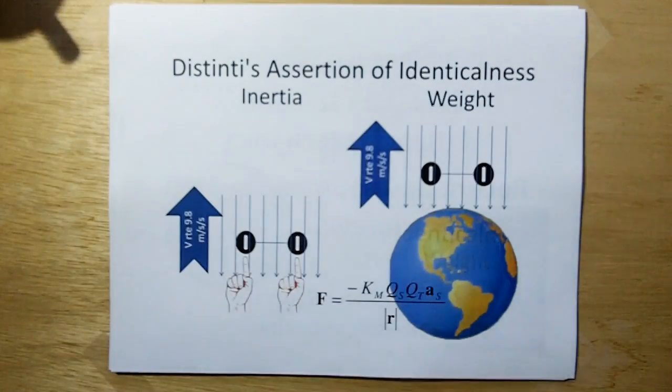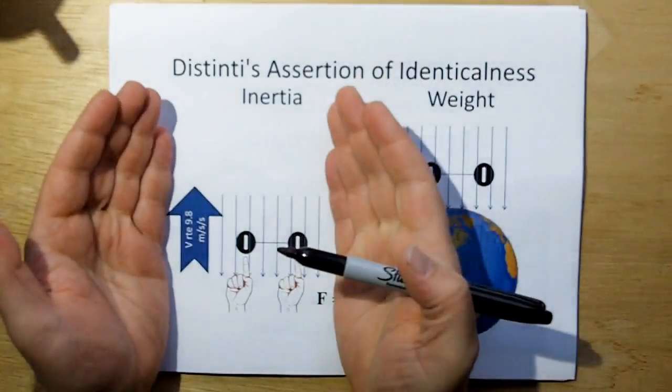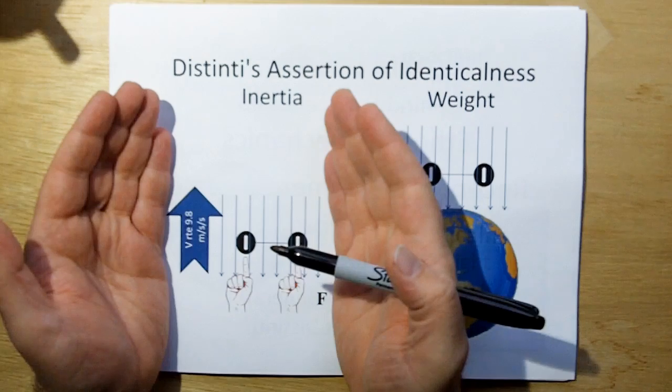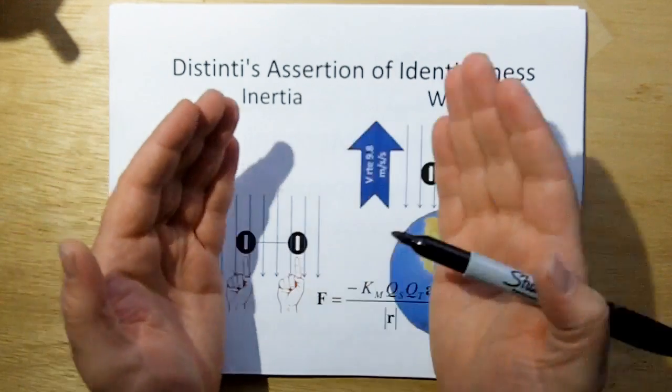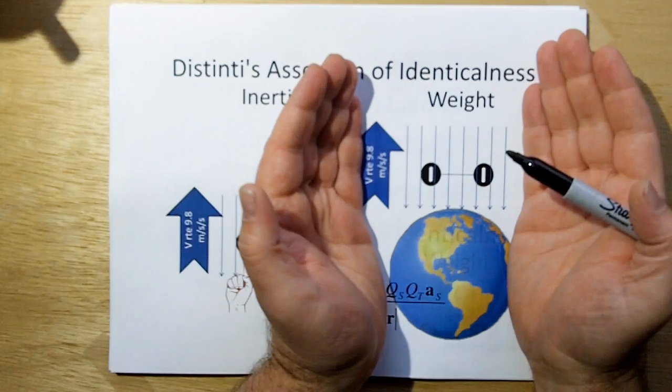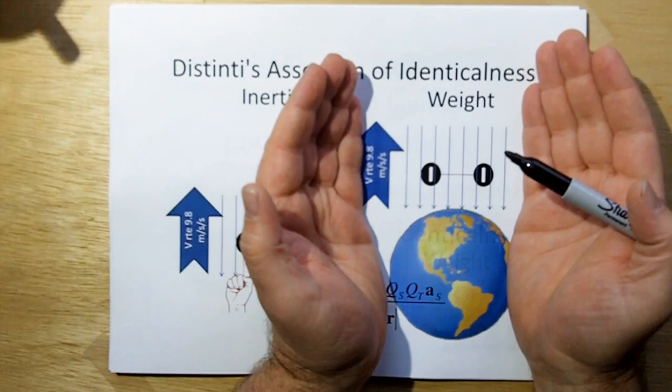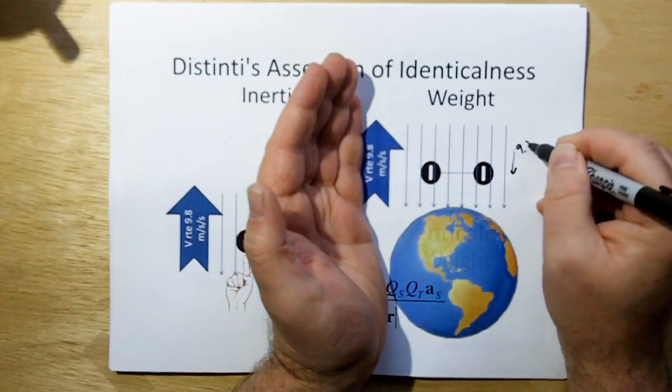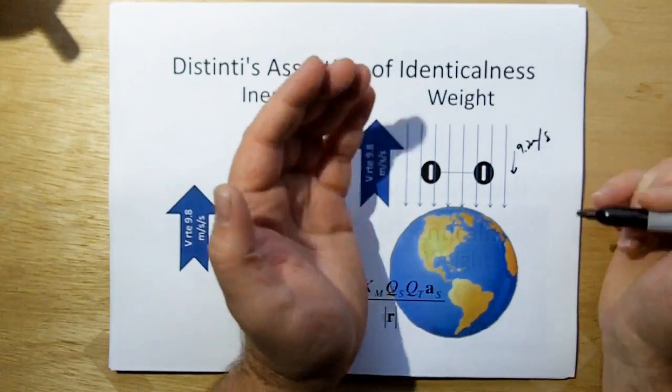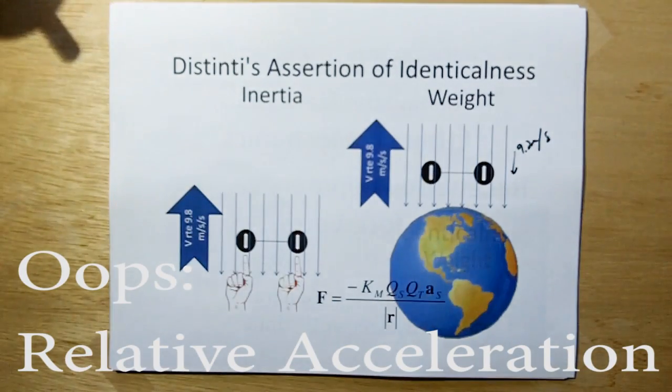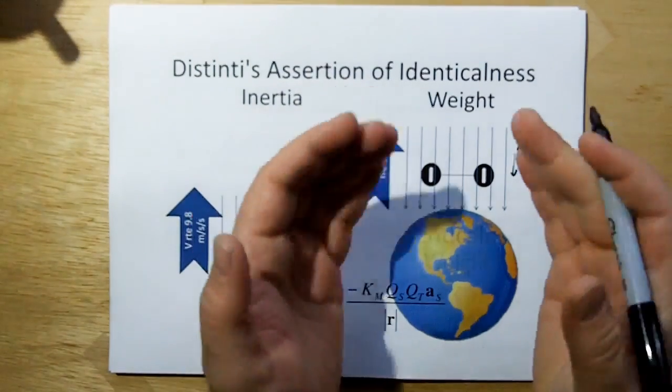Distinti's assertion of identicalness: if we're trying to accelerate this charged system at 9.8 meters per second relative to the ether, and we get a reactionary force due to induction, that would be like saying that if I put this system on the earth, the reason why I'm experiencing 9.8 meters per second squared is because the ether is accelerating earthward at 9.8 meters per second squared. The relative velocity of the system relative to the ether is inertia, and I'm saying it's identical as the form of gravity.